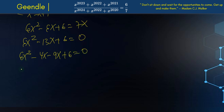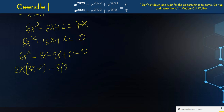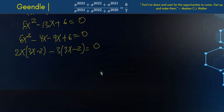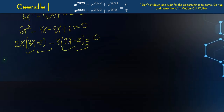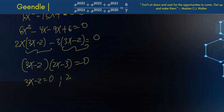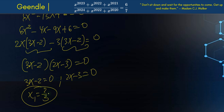To factor, I'll split the middle term: 6x squared minus 4x minus 9x plus 6 equals 0. Factoring in pairs: 2x times (3x minus 2) plus 3 times (3x minus 2) equals 0, giving (3x minus 2)(2x minus 3) equals 0. So x₁ equals 2 over 3 and x₂ equals 3 over 2. These are the solutions.